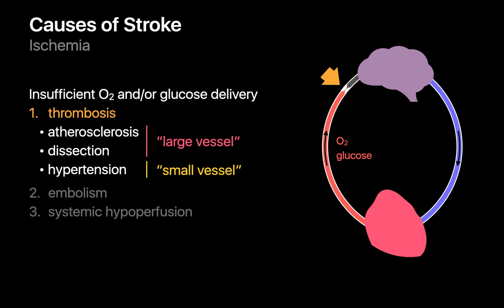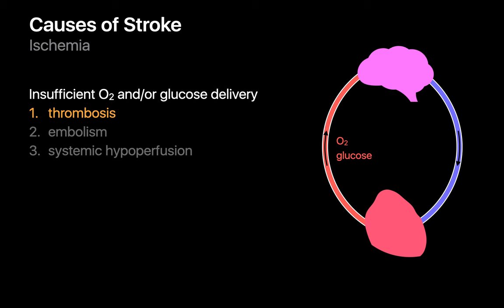Large vessel atherosclerotic and dissection-associated strokes are more severe and have worse outcomes than small vessel strokes. Not all thrombotic strokes are arterial — thrombosis of a vein draining the brain can also result in impaired perfusion leading to a stroke, kind of like how a traffic accident on the highway can cause all traffic behind it to come to a standstill.